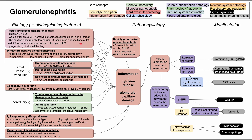Rapidly progressive glomerulonephritis is a distinct phenotype that the first six etiologies can all cause. Its characteristic finding is crescent formations on light microscopy, electron microscopy, and immunofluorescence, and it typically signifies a very poor prognosis — patients may reach end-stage renal disease within weeks. The lower four etiologies are less likely to cause this, but all types can present as standard glomerulonephritis without crescent formation.